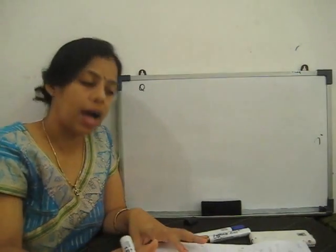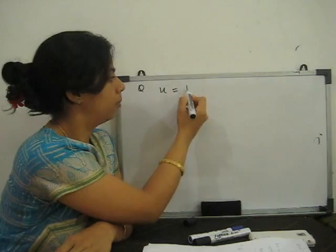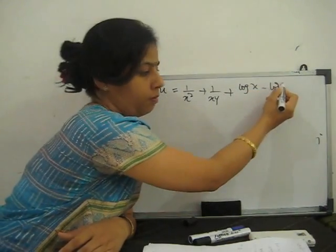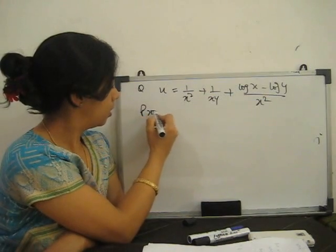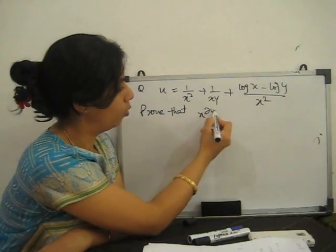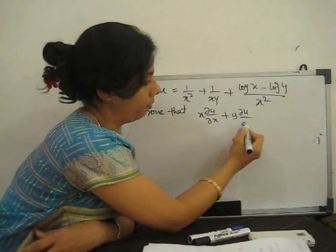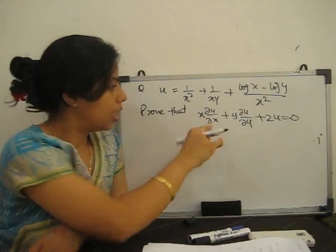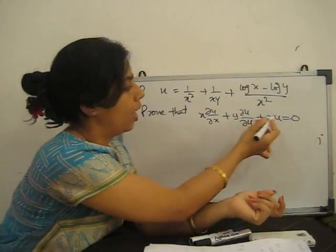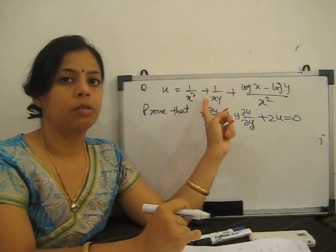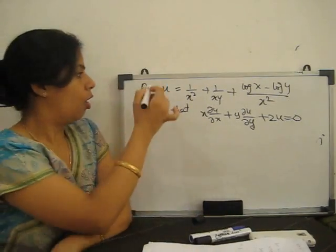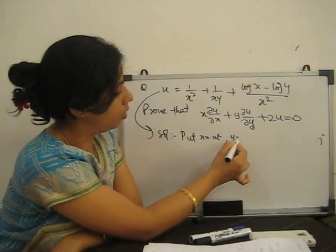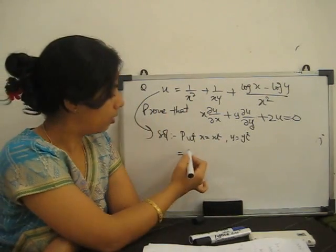Next example: with the help of Euler's theorem, if u is a function of x and y given by u = 1/x² + 1/(xy) + [log(x) − log(y)] / x², then prove that x·(∂u/∂x) + y·(∂u/∂y) + 2u = 0. This means n = −2, so we need to find the degree of this equation. We substitute x = xt, y = yt.